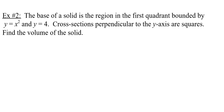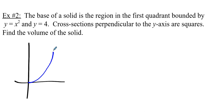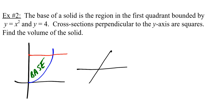The base of a solid is the region in the first quadrant bounded by y equals x squared and y equals four — that's the same base region. This time we take cross sections perpendicular to the y-axis. We place the base on a table and slice perpendicular to the y-axis to get a Triscuit.